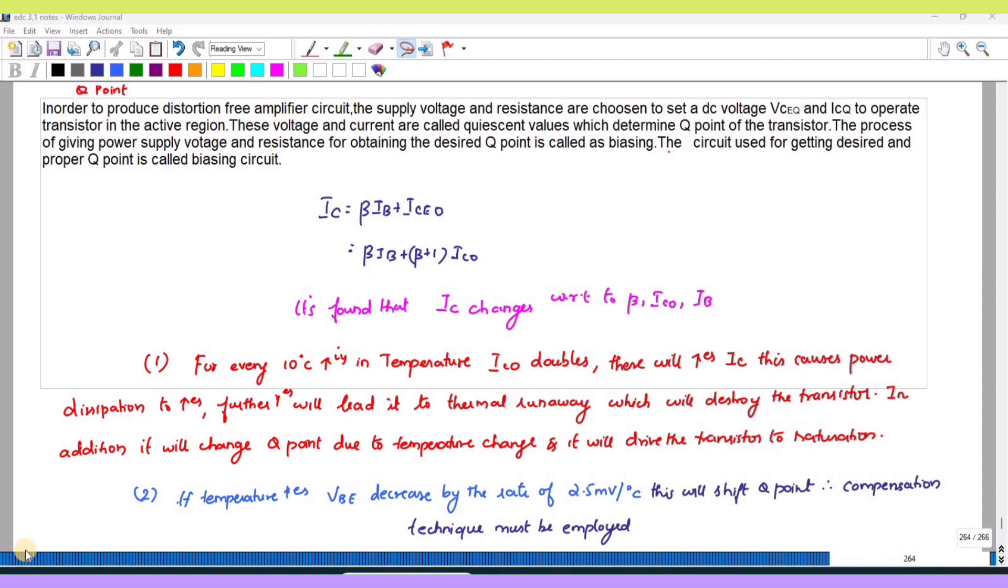These voltages and currents are called quiescent values which determine the Q-point of the transistor. The process of giving power supply voltage and resistance for obtaining the desired Q-point is called biasing. The circuit used for getting the desired and proper Q-point is called a biasing circuit.